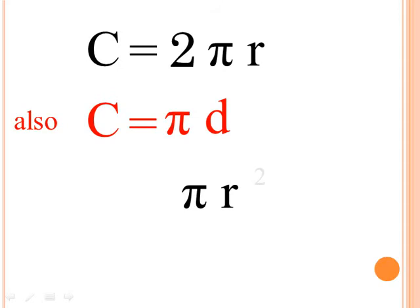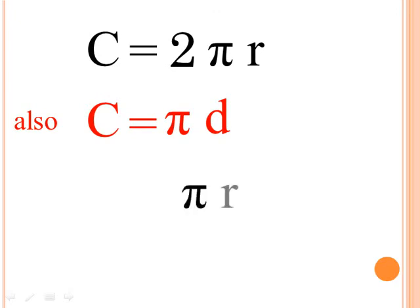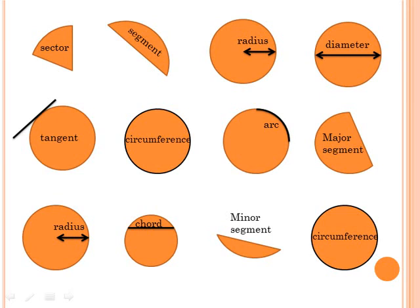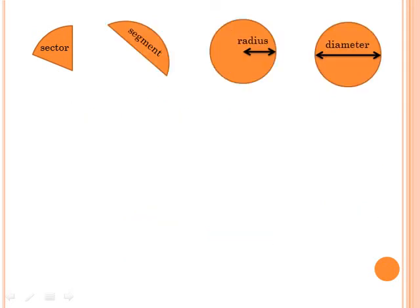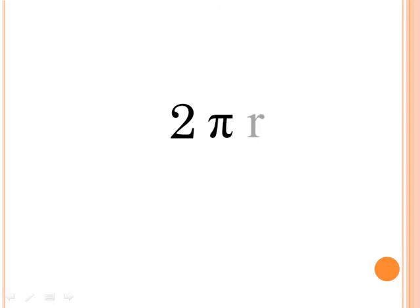Two times pi times r is circumference, and pi times r squared is the area. Sector, segment, radius, diameter, tangent, circumference, arc, major segment, radius, chord, minor segment, circumference. Two times pi times r is circumference.